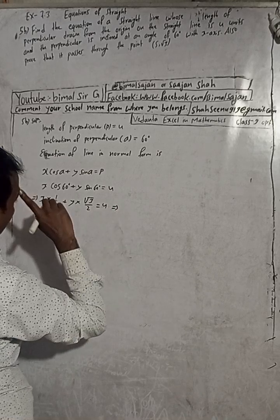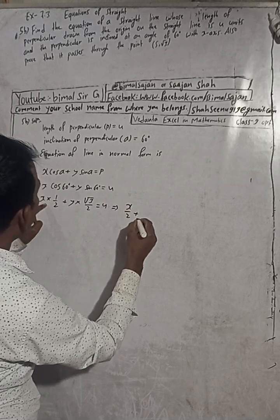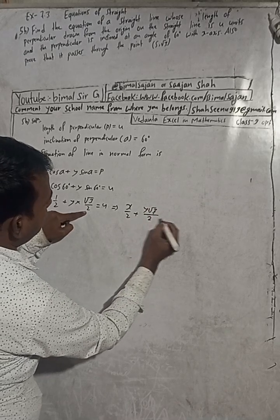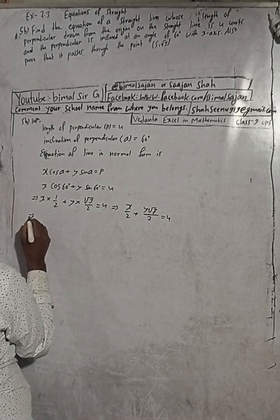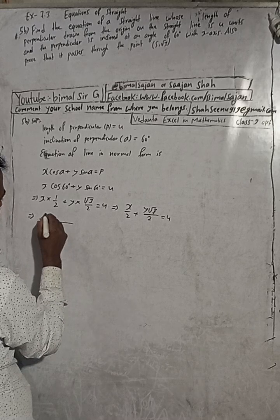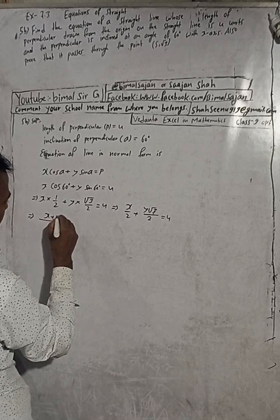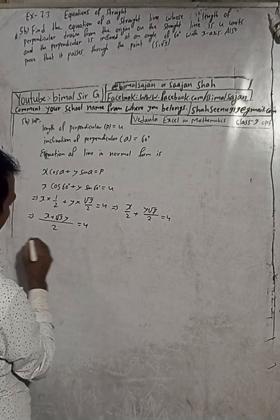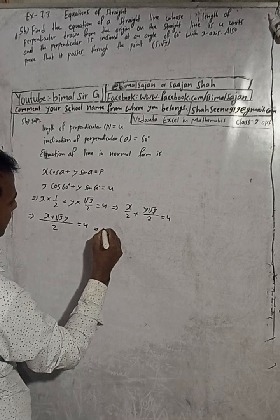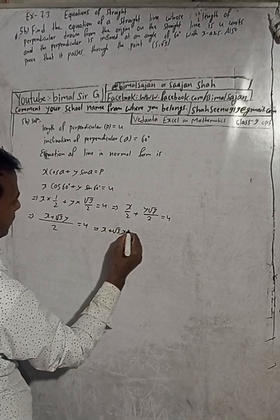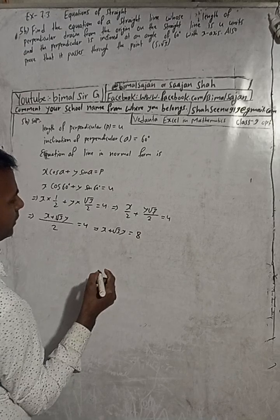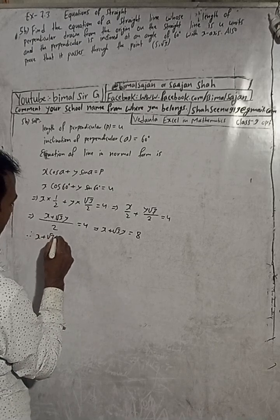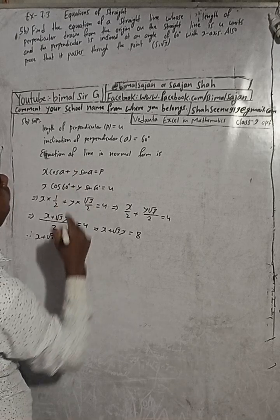Solving this: x/2 + y√3/2 = 4. This implies x + √3y = 8. So this is our required equation, as given in the book: x + √3y = 8 is the required equation.